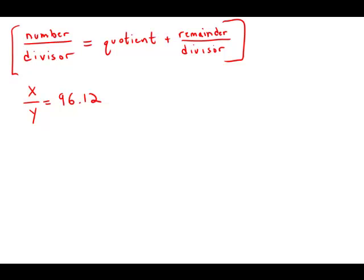So when we write a quotient in decimal form, the whole number, 96, that's the quotient. And the decimal, 0.12, that's the remainder over the divisor.